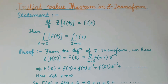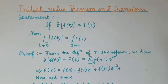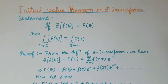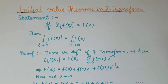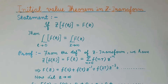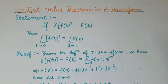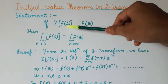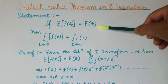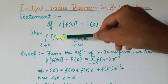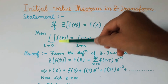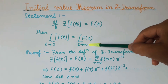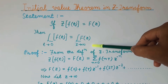Hello everyone, welcome to the signal system class. In this lecture we will discuss the initial value theorem used in Z-transform. The initial value theorem states that if the Z-transform of f(t) is equal to F(z), then the limit of f(t) as t tends to 0 will be equal to the limit of F(z) as z tends to infinity.